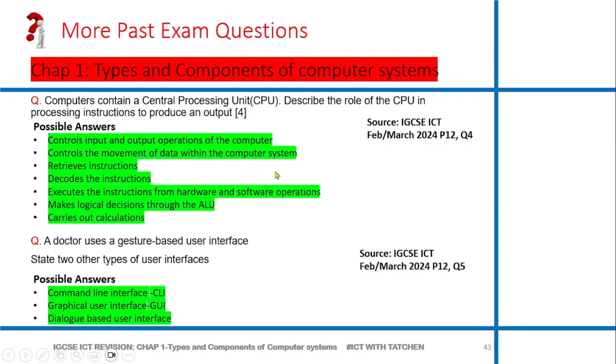The next question from May/June 2024 says computers contain a central processing unit. Describe the role of the CPU in processing instructions to produce a computer output. Basically, what they're asking is how does a CPU work from processing to produce output? First, it controls input and output operations. Next, controls the movement of data within the computer system. CPU is like the brain of the computer - just think about your brain, what does your brain do for you as a human being? These questions are things you can relate to yourself, you can relate to life.